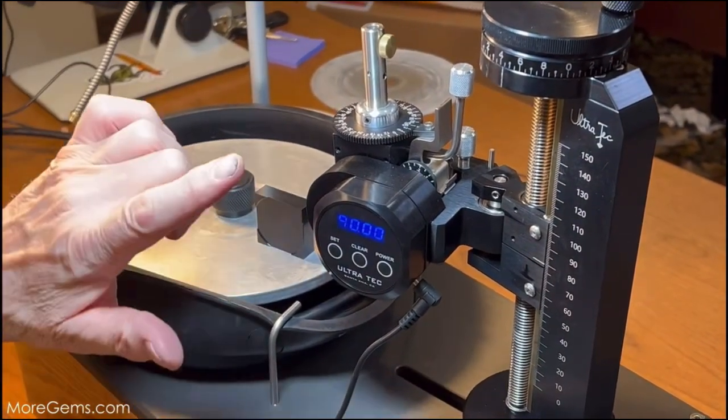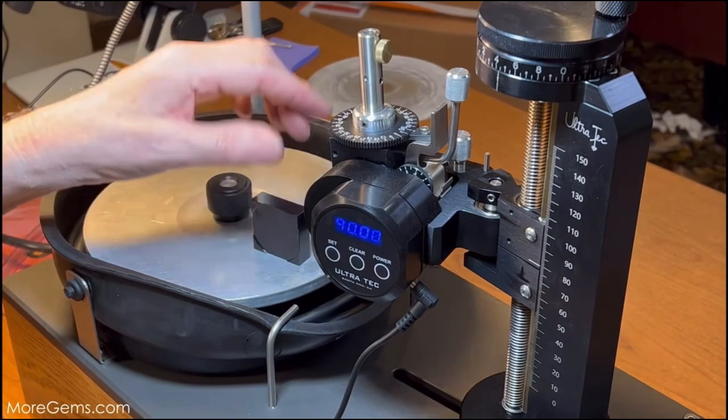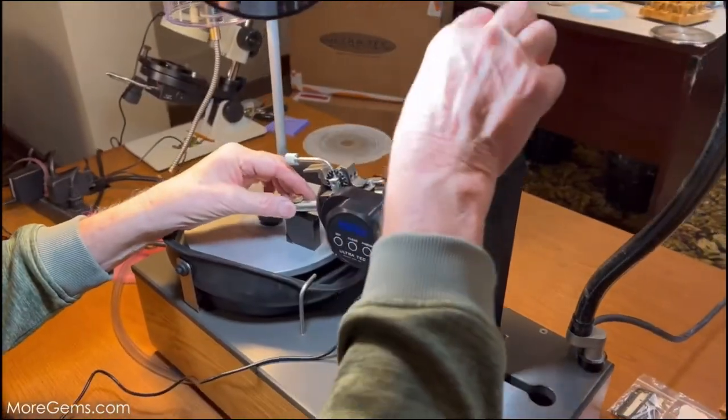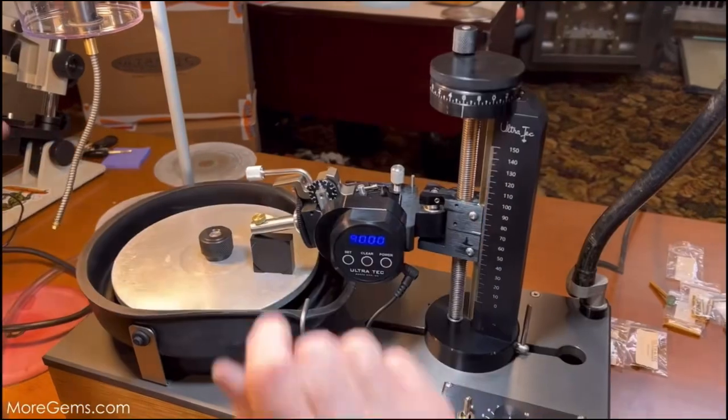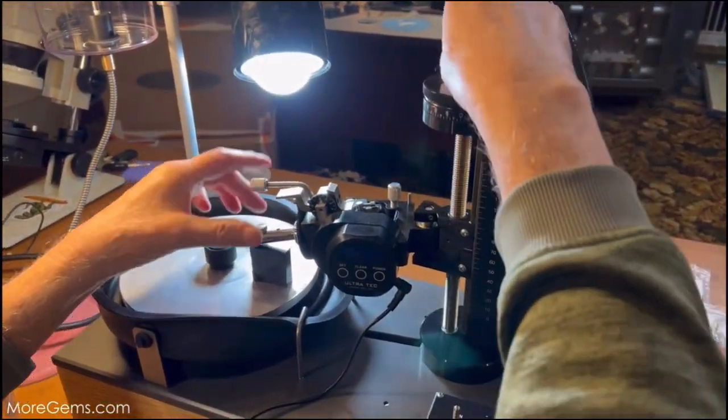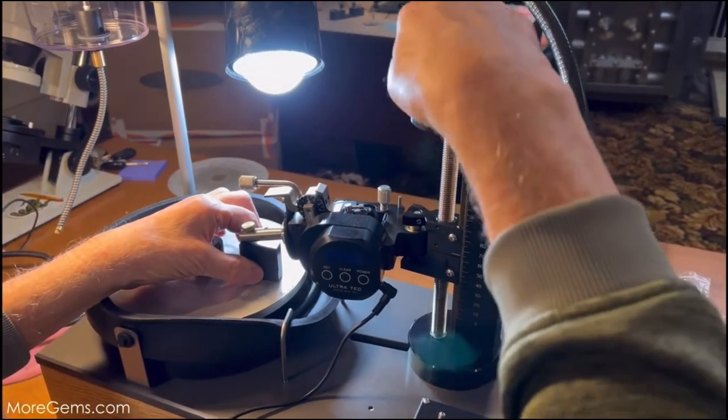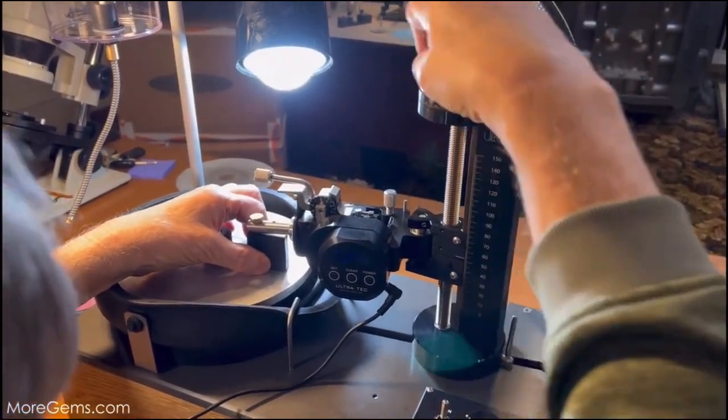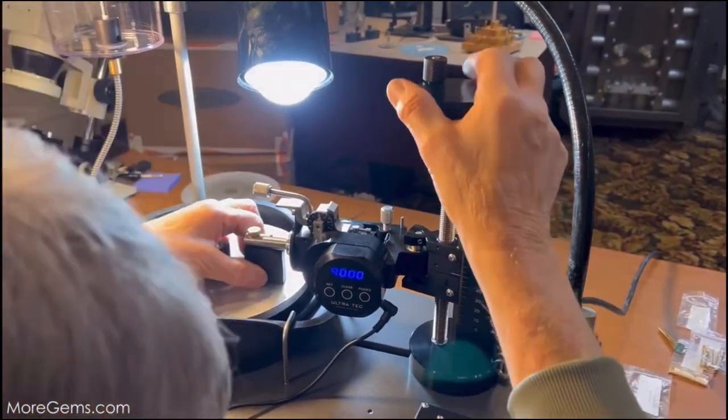We do that by setting it on the block and cranking the mast down. I put the light behind it because you're just trying to get this mast perfectly flat.